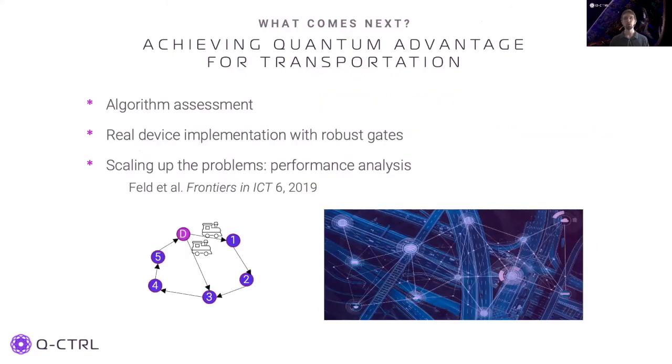Given that a quantum algorithm can solve the vehicle routing problem, and that algorithms comprised of robust pulses can successfully contend with realistic noise channels, what comes next? The large-scale target here is to obtain quantum advantage, where a quantum algorithm provides superior performance over classical algorithms for real transport problems.